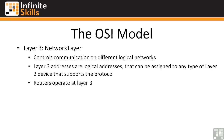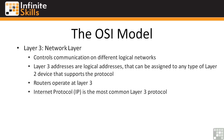Routers are the type of devices that operate at Layer 3. They look at the Layer 3 addresses and don't care what the Layer 2 address is. They see: if you're coming from this Layer 3 network and need to get to that Layer 3 network, I have a route to get there — you need to go out this interface. In general, IP is the most common Layer 3 protocol you'll find.